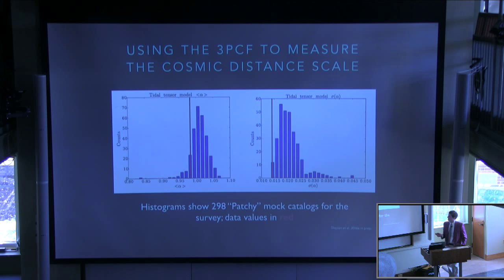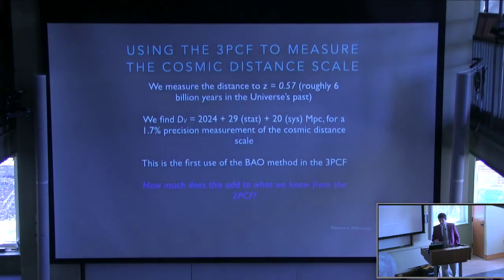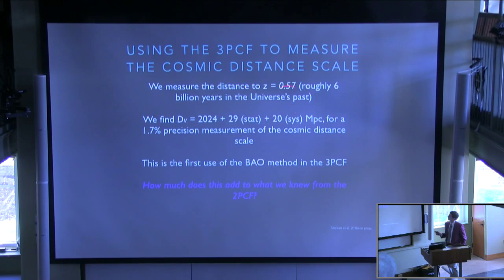Our error bars on the cosmic distance scale: the best-fit value of alpha is fairly typical compared to mock catalogs, and we actually did a little bit better than expected on the error bar — as well as the best 10 mock catalogs for this survey. Crucially, our error bar sigma_alpha is 1.5% — we can measure the cosmic distance scale from the three-point function to about 1.5% precision. In summary, using the three-point function, we've measured the distance to roughly 6 billion years in the universe's past, achieving overall 1.7% precision — the first use of the BAO method for the three-point function.